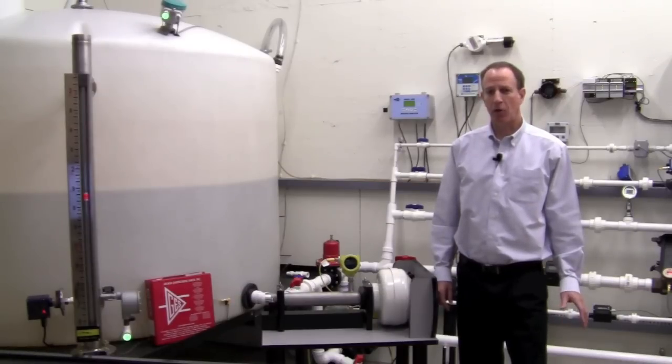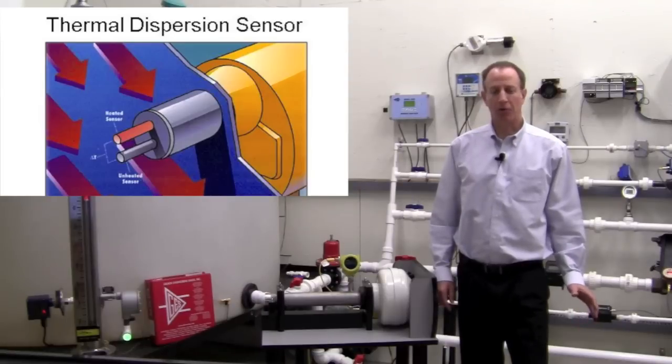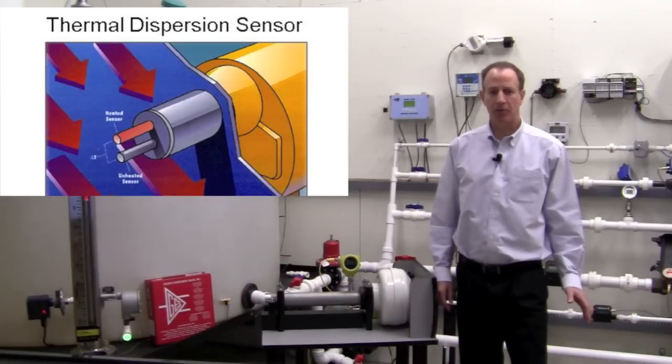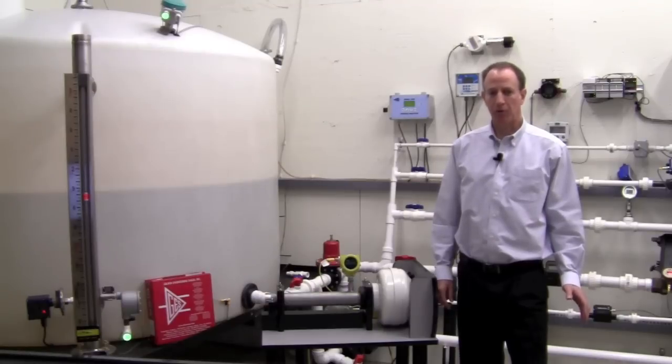The ST series of flow meters operates on the principle of thermal dispersion. The circuitry measures the temperature difference between the heated and non-heated sensors. The greater the mass flow rate, the less temperature difference between the two sensors.